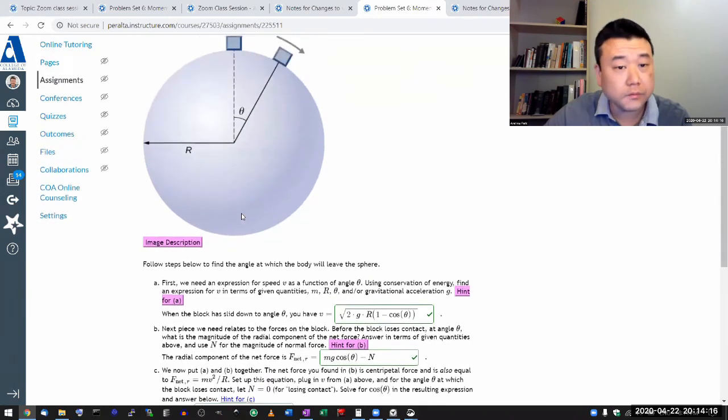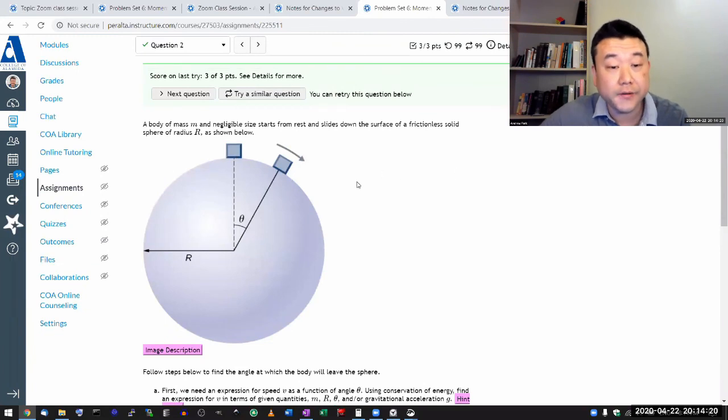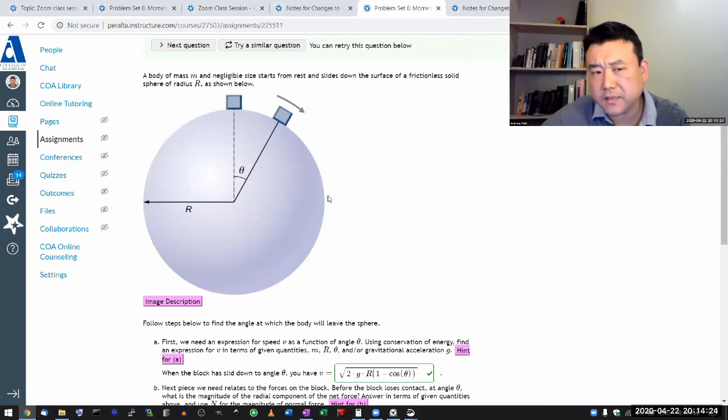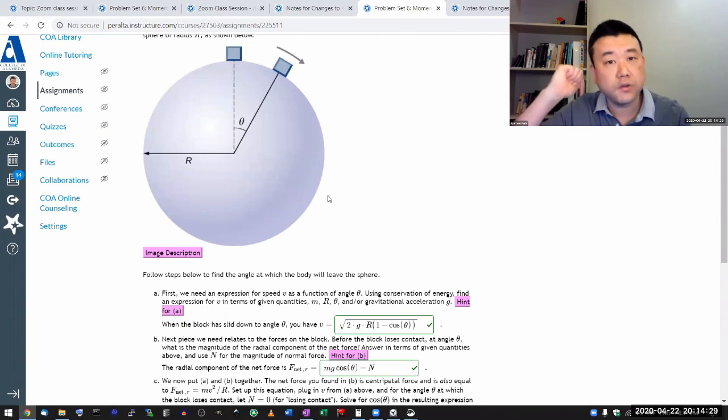So yeah this is a classic question. I think you see this question in many different textbooks. It's what we call mixed strategy question in that you have to use conservation of energy and you have to use Newton's law strategy, draw free body diagram and all that, and you have to know about circular motion. So it brings a lot of different pieces together. That's why it's a classic question.